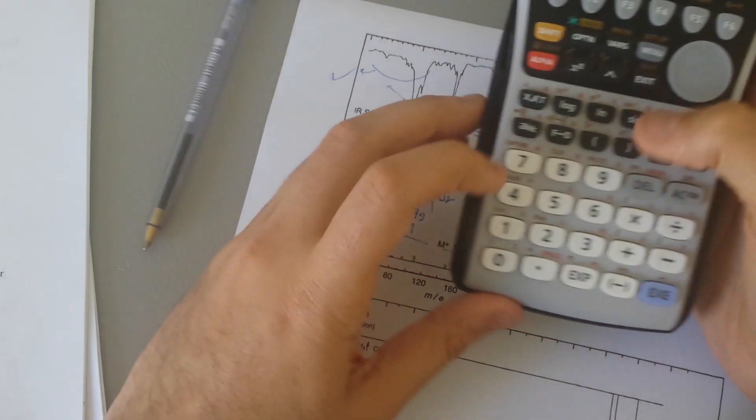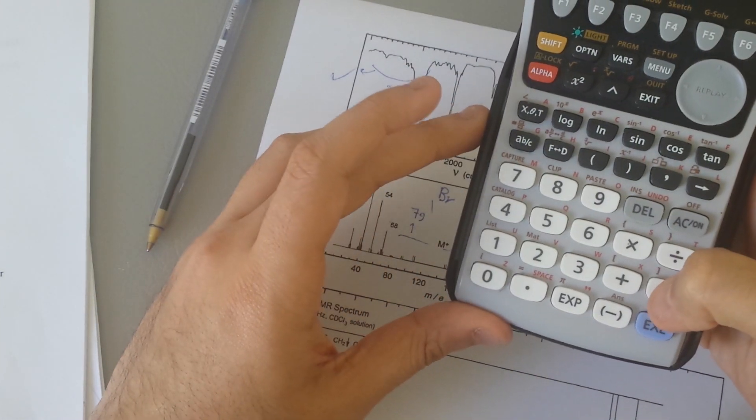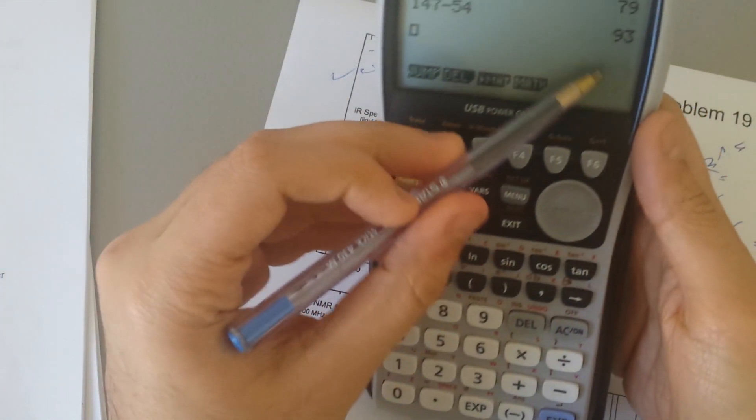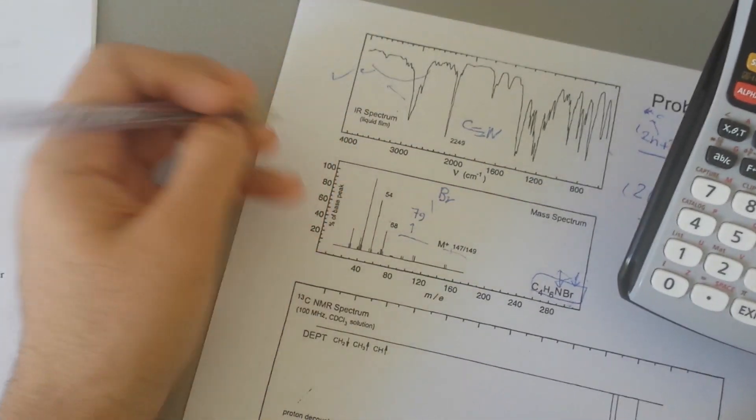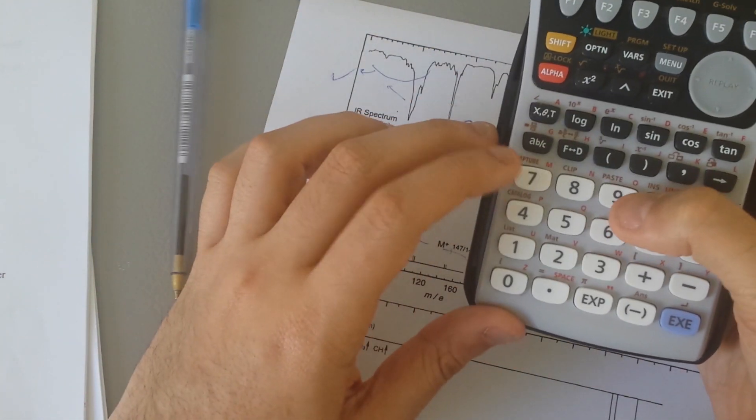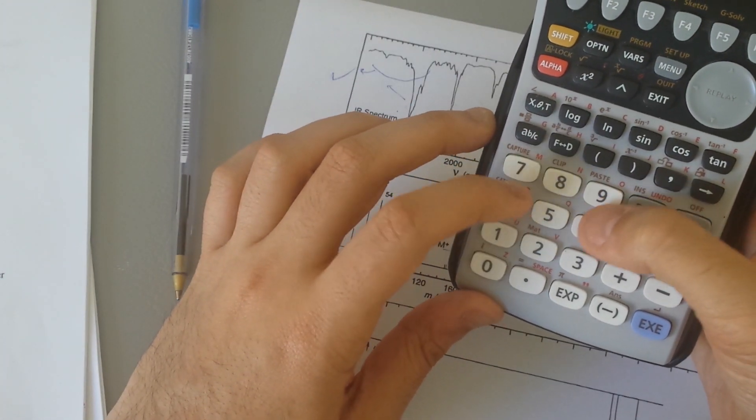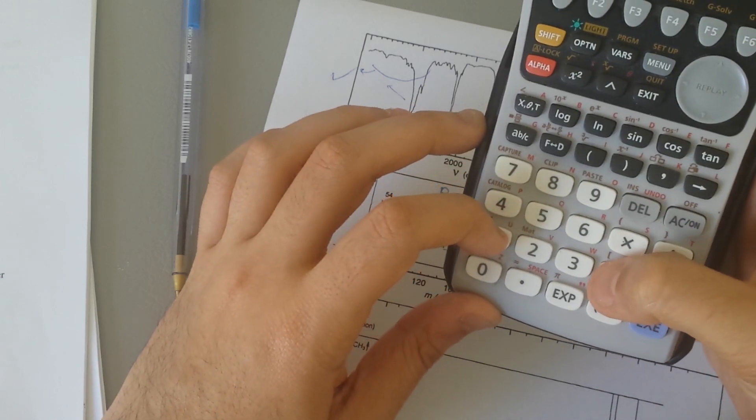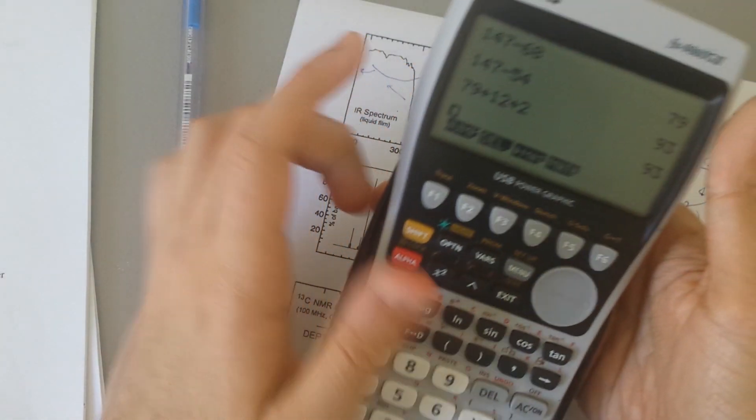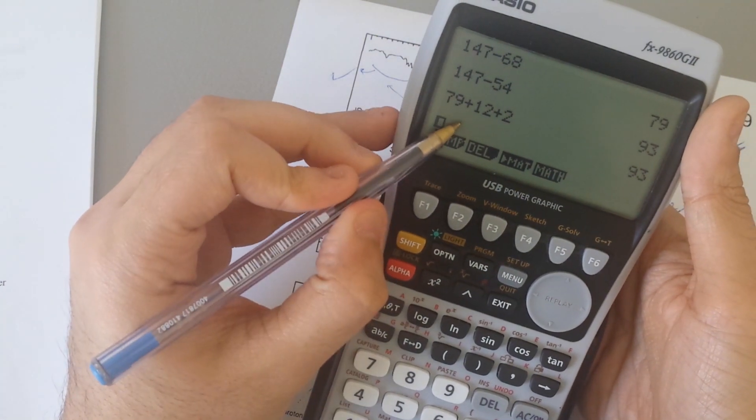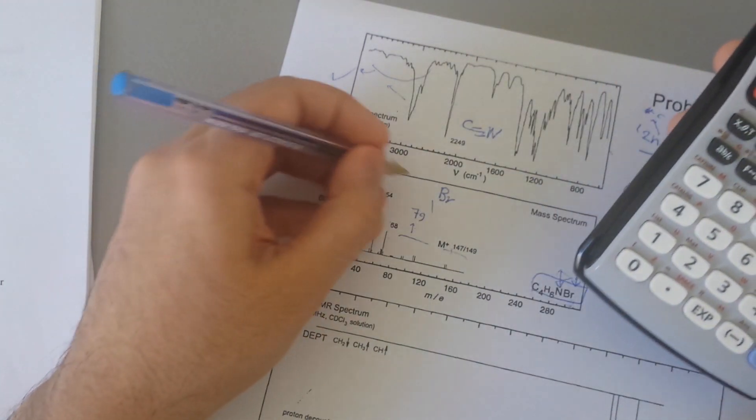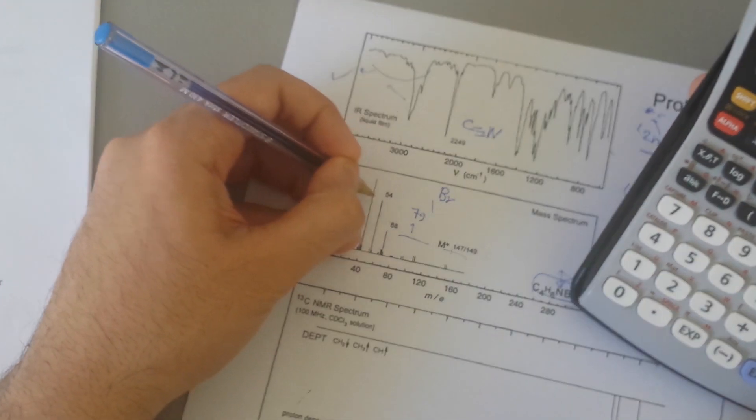Then we have 54, 147 minus 54 gives us 93, which I believe should be a bromine with CH2. Let me find out. Bromine with 12 plus 2. Yes, there you go. So bromine, one carbon, two hydrogen.